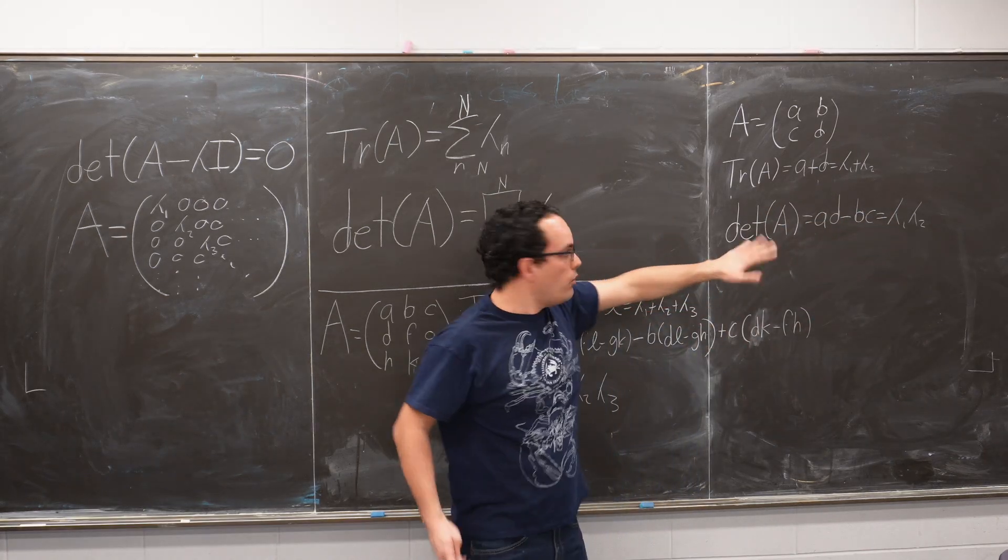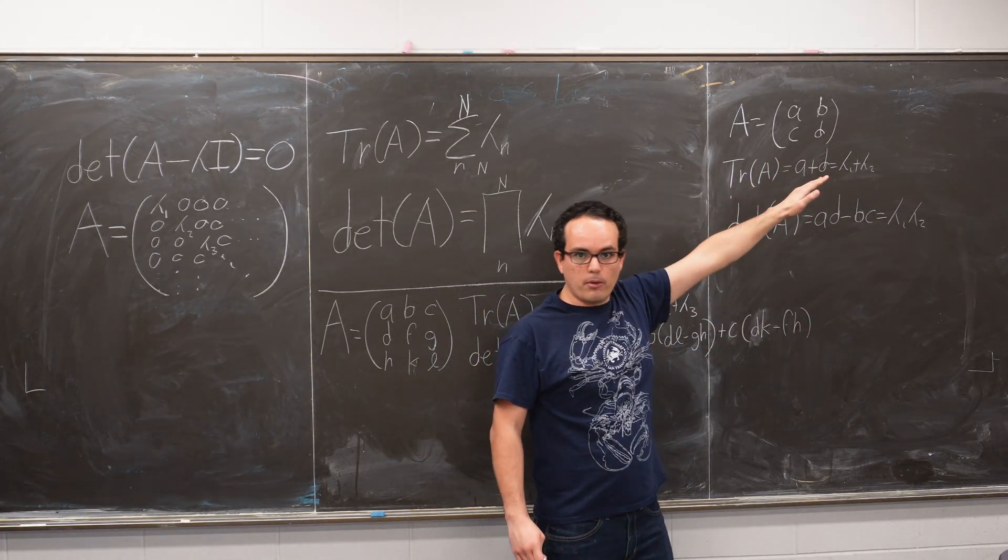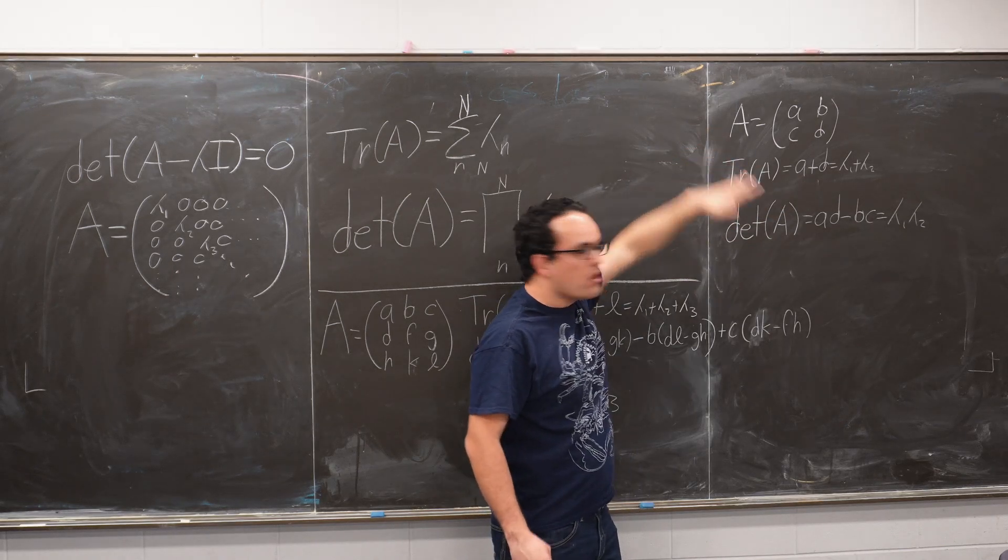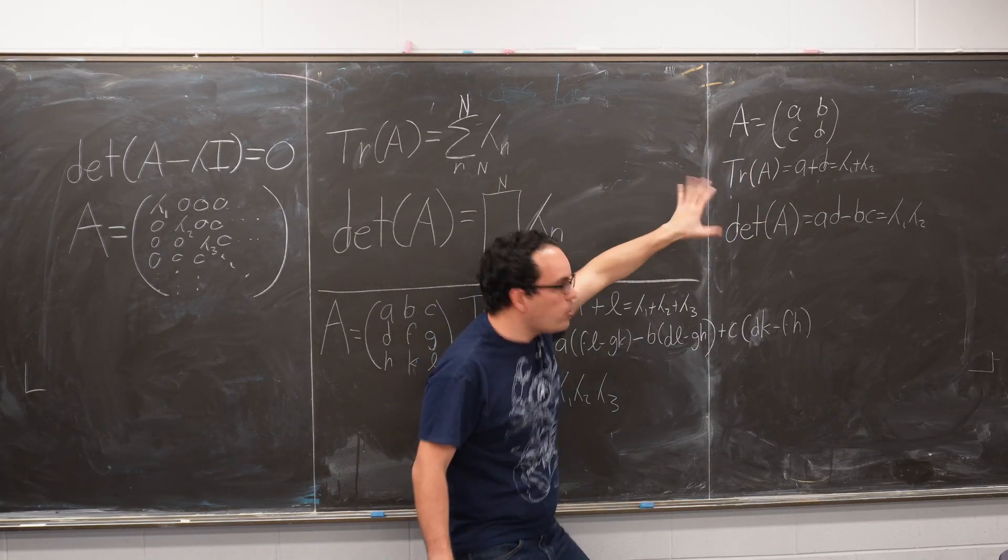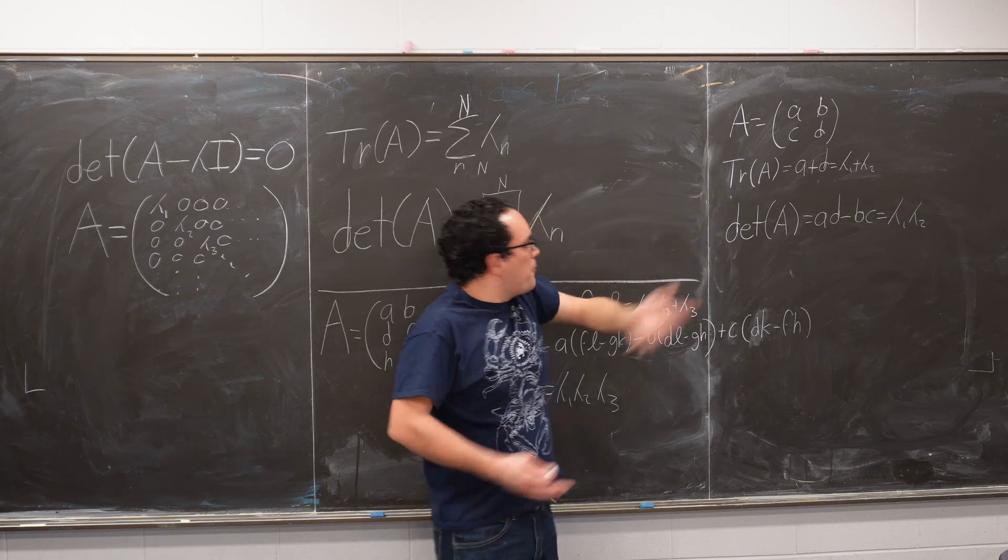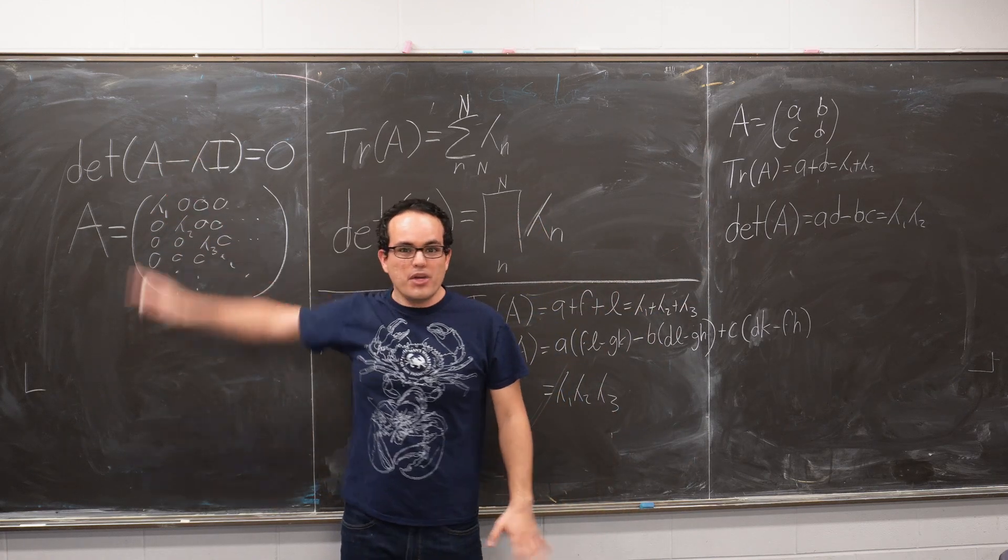And that's it. Look, we have two variables, λ1 and λ2, and we have two equations. This is solvable. You can always solve this, right? And so, you don't need to use the characteristic equation.